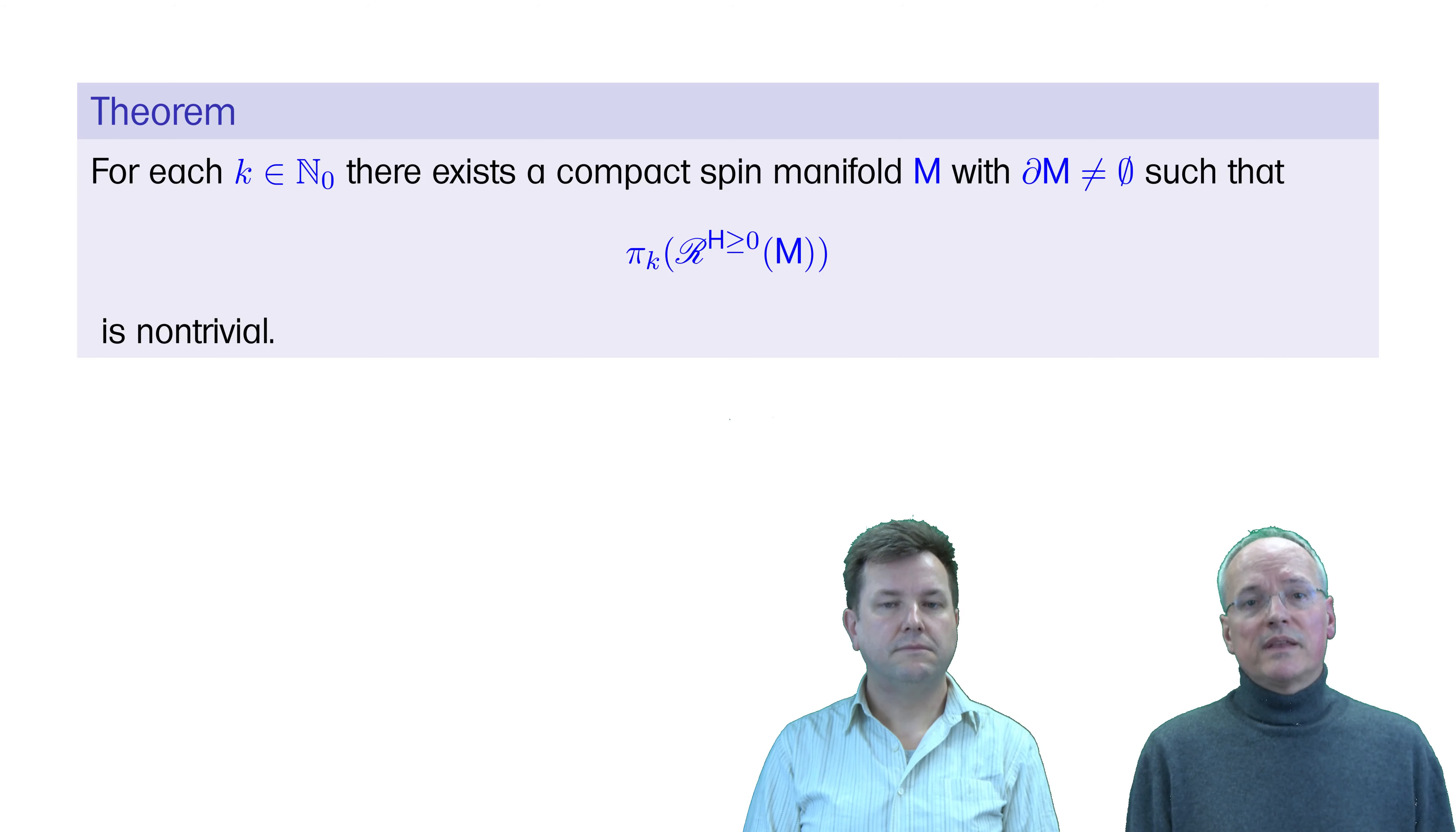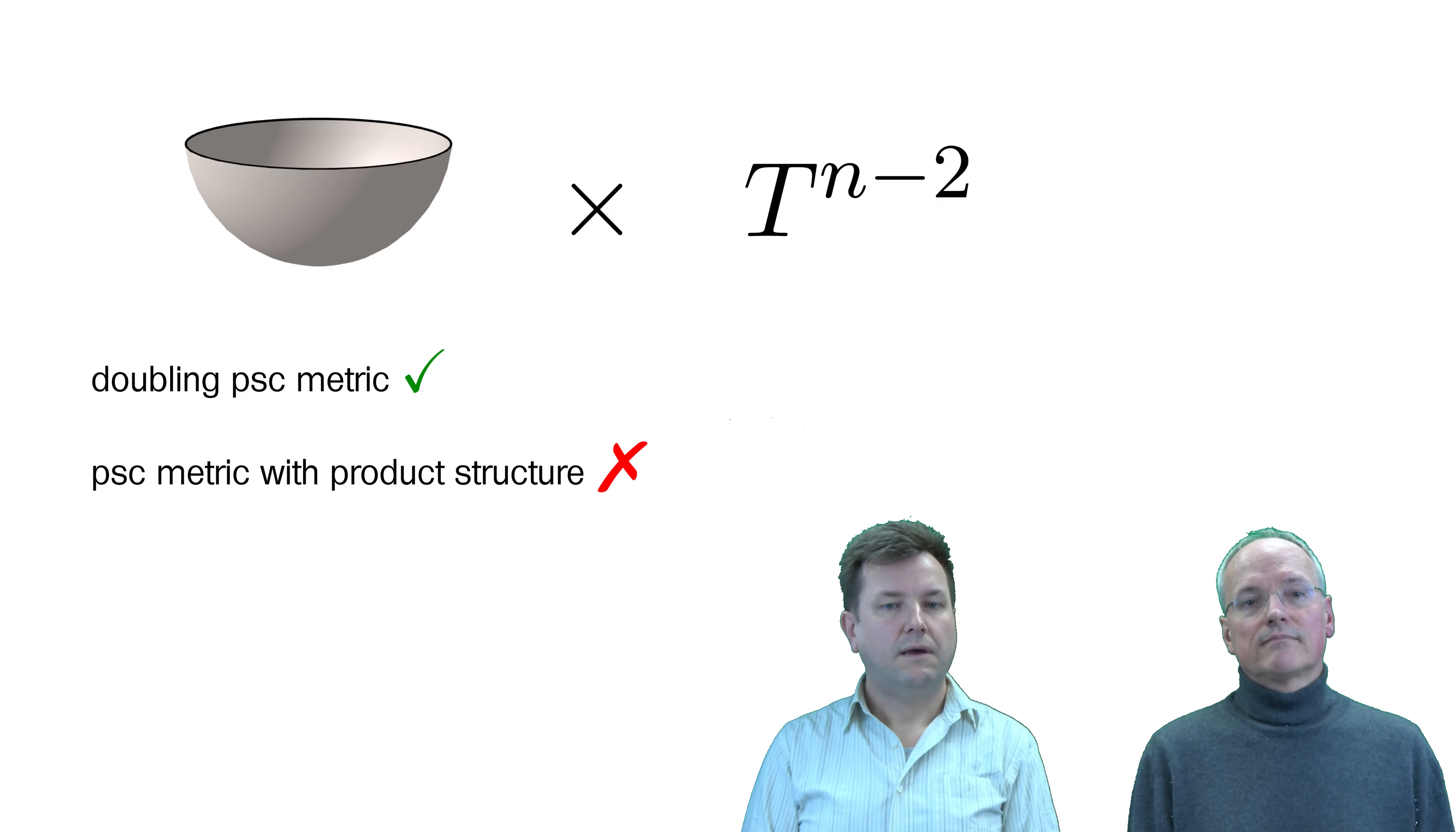We show by example that these spaces of metrics have non-trivial homotopy groups in general. You will have noticed that the product boundary condition is missing in the diagram. Indeed, there are examples which carry doubling PSC metrics, but no product PSC metrics.